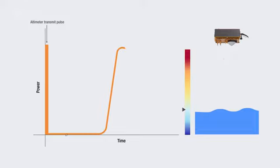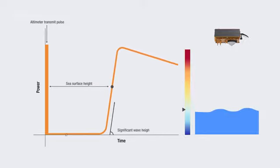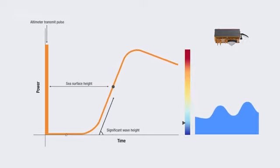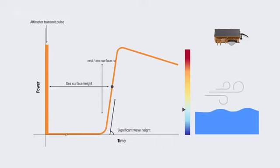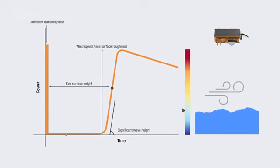Over the ocean, the returned echo provides a waveform. The shape of the waveform is used to determine the sea surface height from the radar range, the significant wave height from the slope of the waveform leading edge, and the surface wind speed from the ocean roughness expressed by the power of the radar echo.